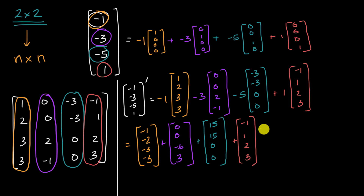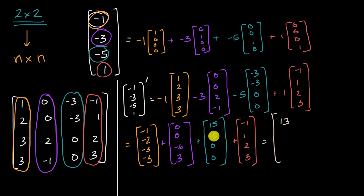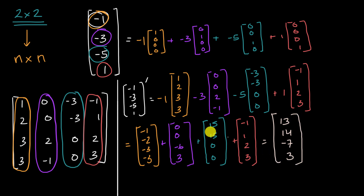Now we just add everything together, the corresponding terms. The first component: -1 + 0 + 15 + (-1) = 13. The second: -2 + 0 + 15 + 1 = 14. The third: -3 + (-6) + 0 + 2 = -7. And the fourth: -3 + 3 + 0 + 3 = 3. We have found the mapping of this four-dimensional vector based on a four-by-four transformation matrix. Very cool!